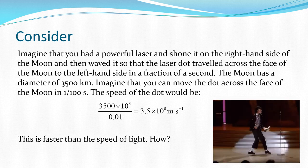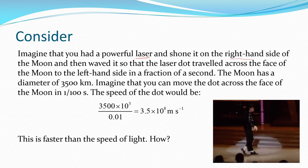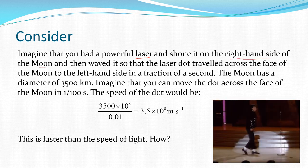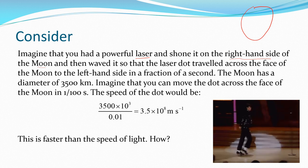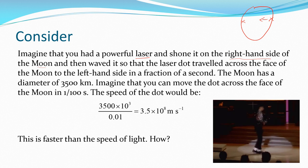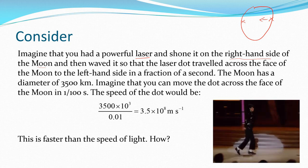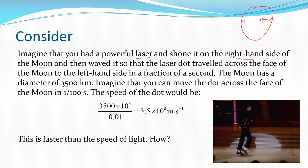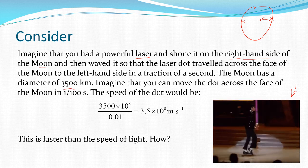Imagine you've got a very powerful laser. You shine it on one side of the moon and then move that laser dot across the face of the moon. Imagine you could shine your laser dot on one side and then move it across until it shone on the other side of the moon, moving your hand or instrument in a fraction of a second.